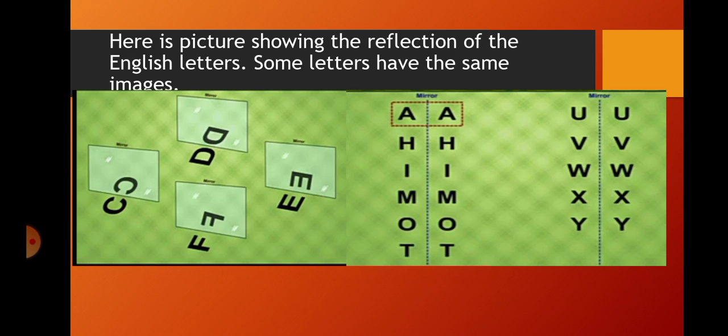Here is a picture showing the reflection of English letters. Some letters have the same image, but some appear reversed, just like C, D, E and F. We can see the letters C, D, E and F are in reverse. They appear reversed in the mirror. But some letters like A, H, I, M, O, T, U, V, W, X, Y, they appear the same image.